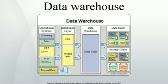The staging layer or staging database stores raw data extracted from each of the disparate source data systems. The integration layer integrates the disparate datasets by transforming the data from the staging layer, often storing this transformed data in an operational data store database. The integrated data are then moved to yet another database, often called the data warehouse database, where the data is arranged into hierarchical groups often called dimensions and facts and aggregate facts. The combination of facts and dimensions is sometimes called a star schema.